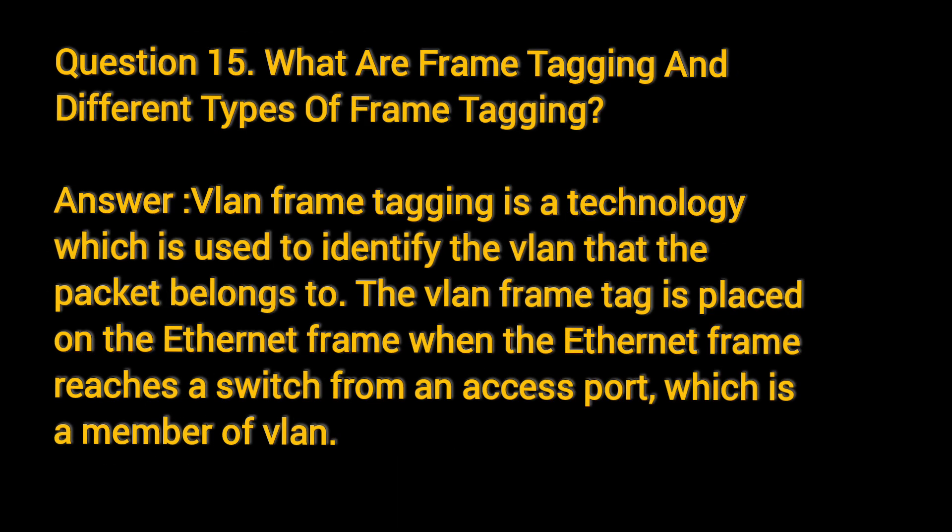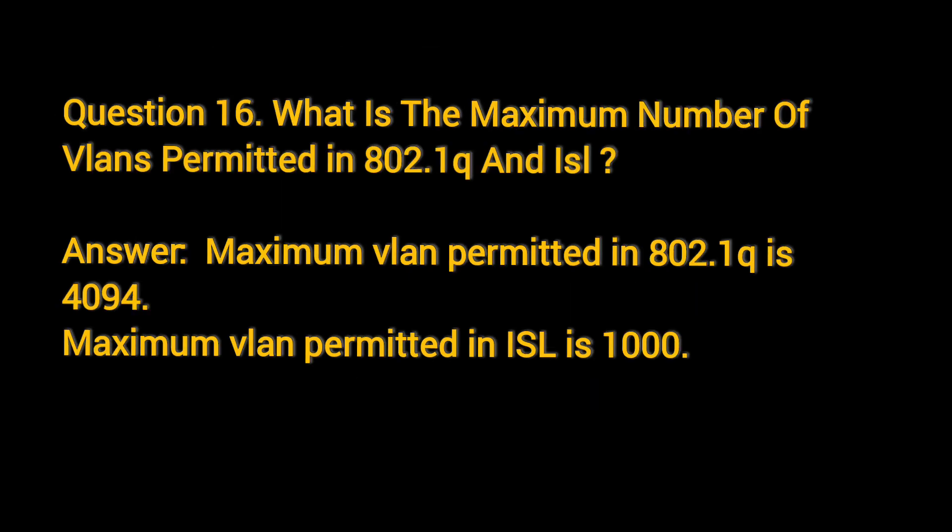Question 15: What are frame tagging and different types of frame tagging? VLAN frame tagging is a technology used to identify the VLAN that the packet belongs to. The VLAN frame tag is placed on the Ethernet frame when the Ethernet frame reaches a switch from an access port which is a member of a VLAN.